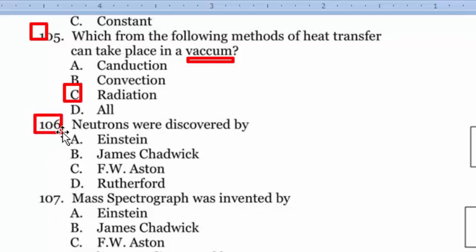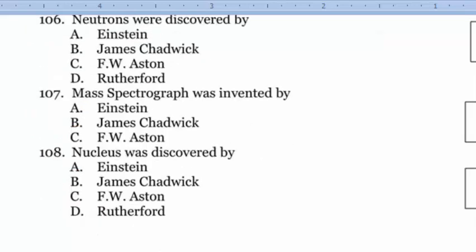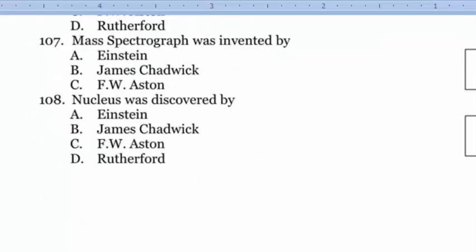Next question: Neutrons were discovered by Chadwick, option B. Question number 107: Mass spectrograph was invented by F.W. Aston, option C.